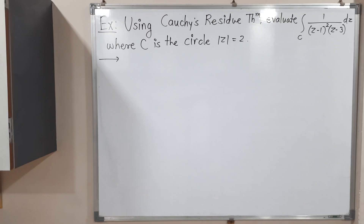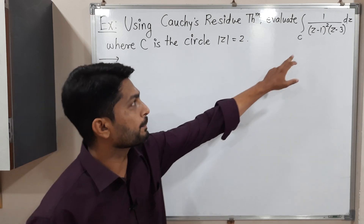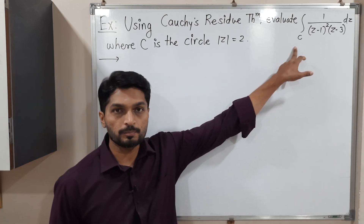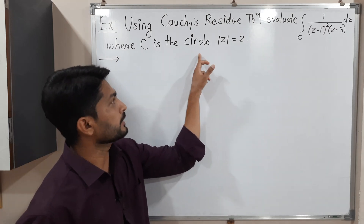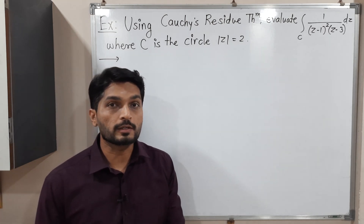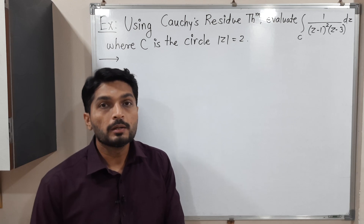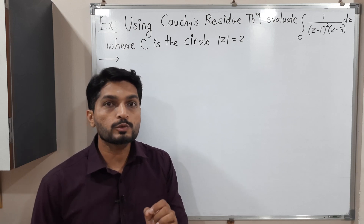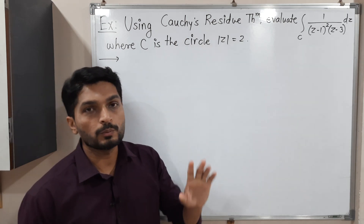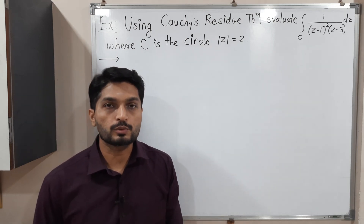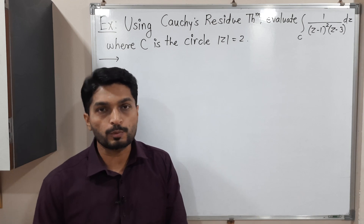Hi everyone. In this video we are going to discuss this example. We have to find the value of this complex integration over curve C, which is a circle mod Z equals 2. We have to solve this problem with the help of Cauchy's residue theorem. So let us start to solve this problem.